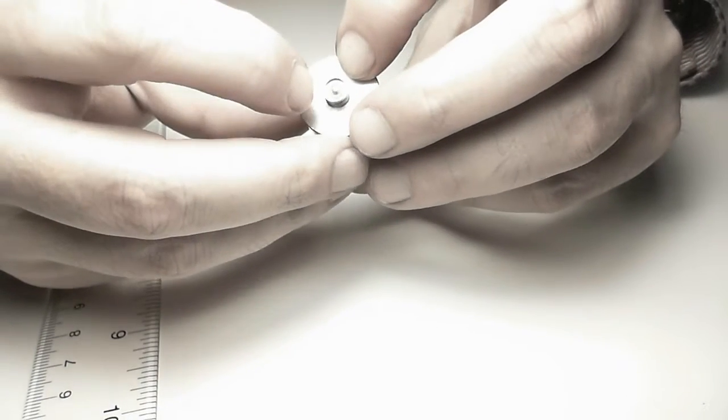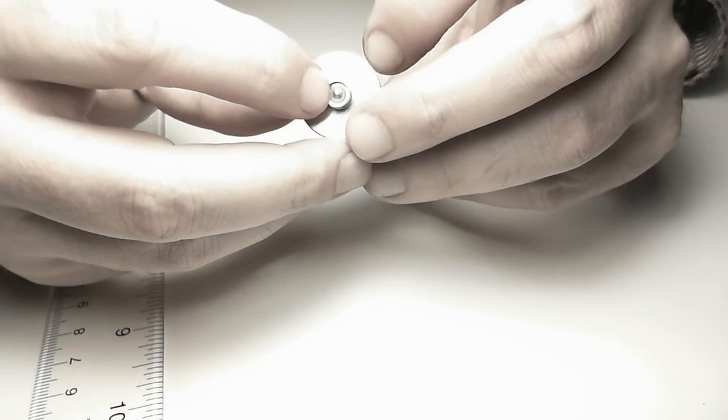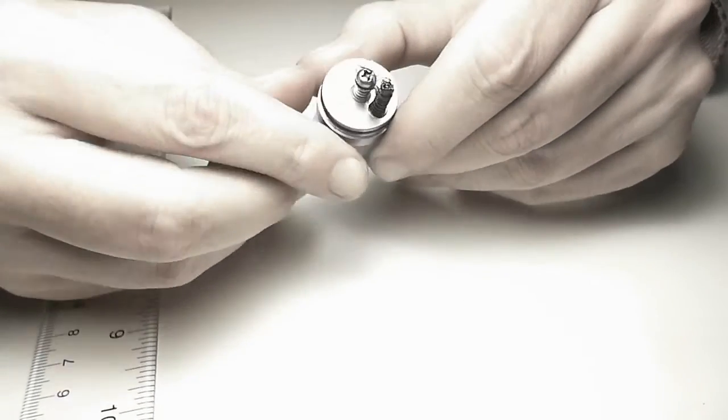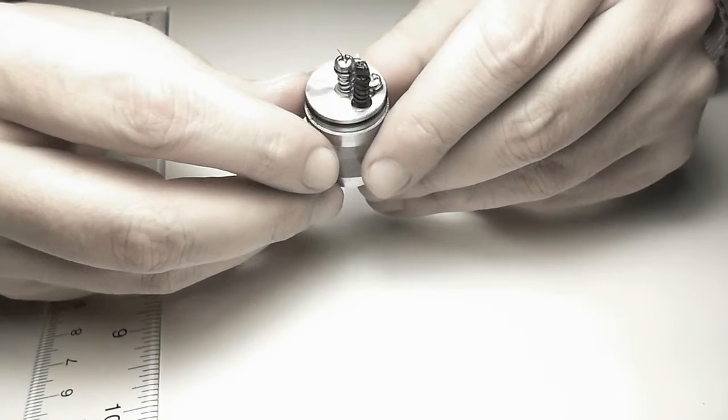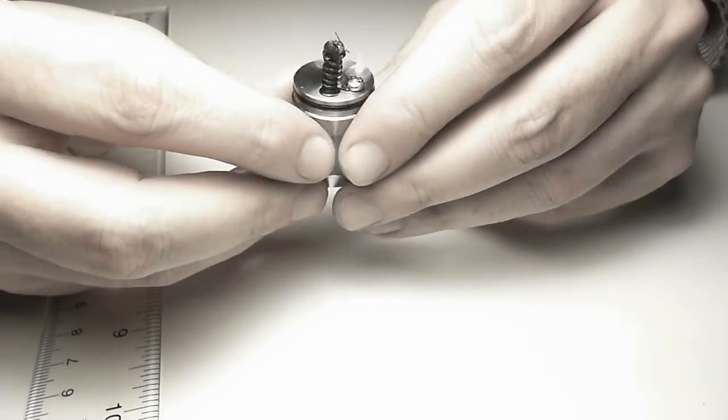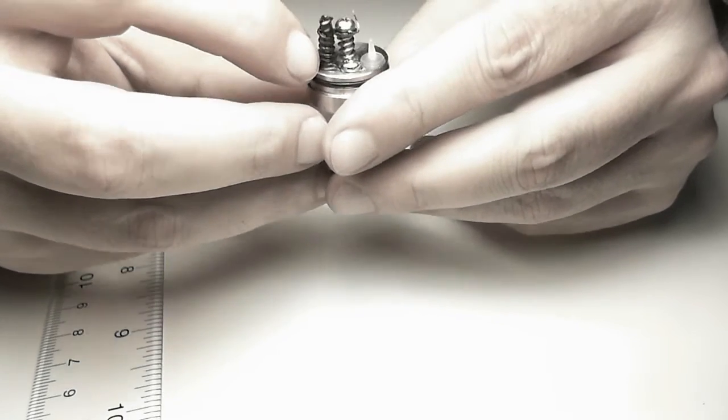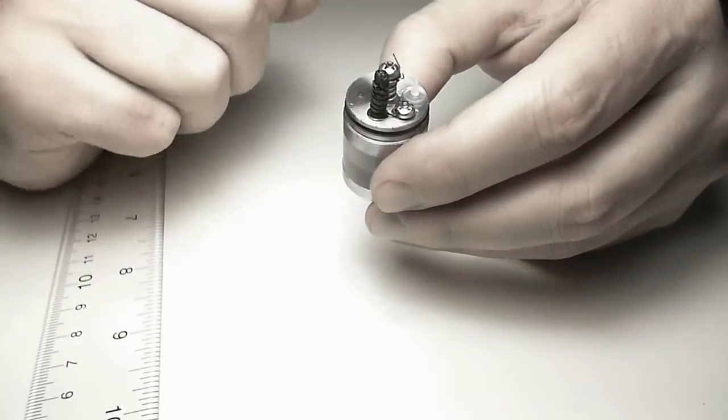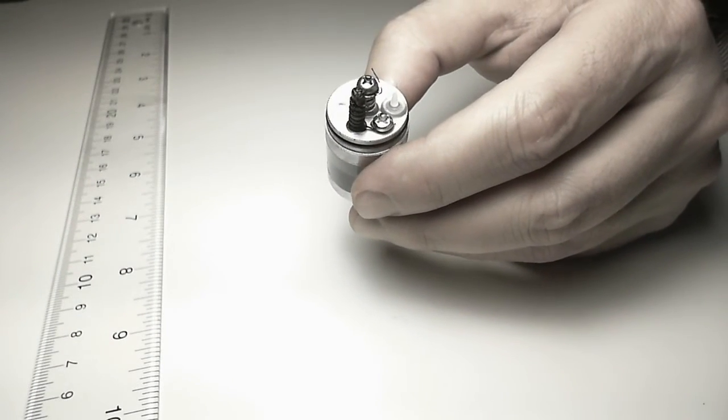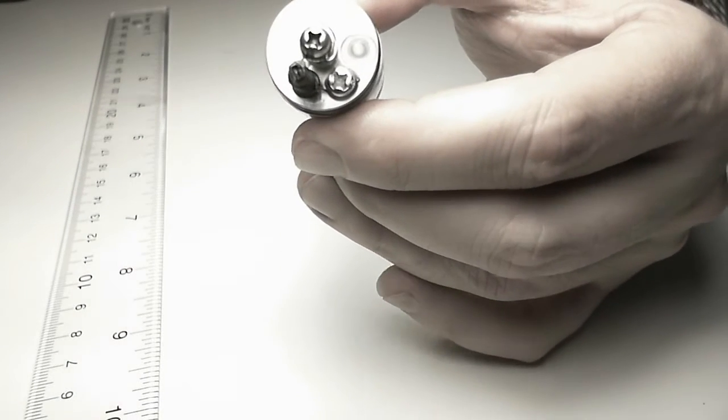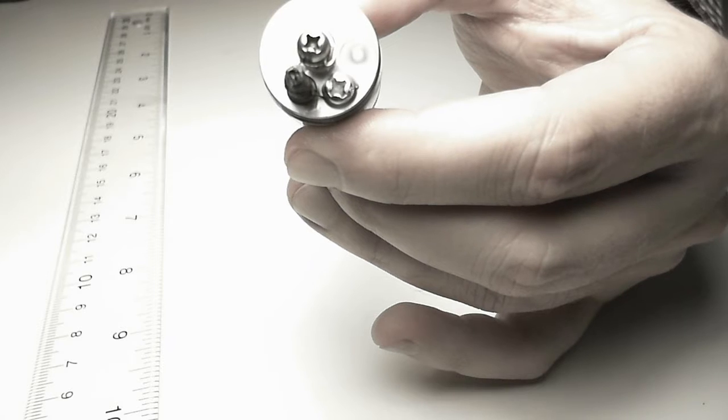Another feature of this atomizer is the 510 connection is adjustable. You can adjust it by turning this screw. What I notice is the wick hole is pretty big, which allows you to build a pretty large coil setup.